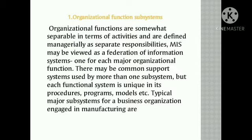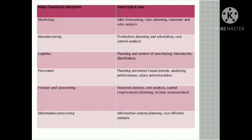The typical major subsystems for a business organization engaged in manufacturing are: manufacturing subsystems, which include production planning, scheduling, and cost control analysis; and marketing function subsystems, which include sales forecasting, sales planning, and customer and sales analysis.